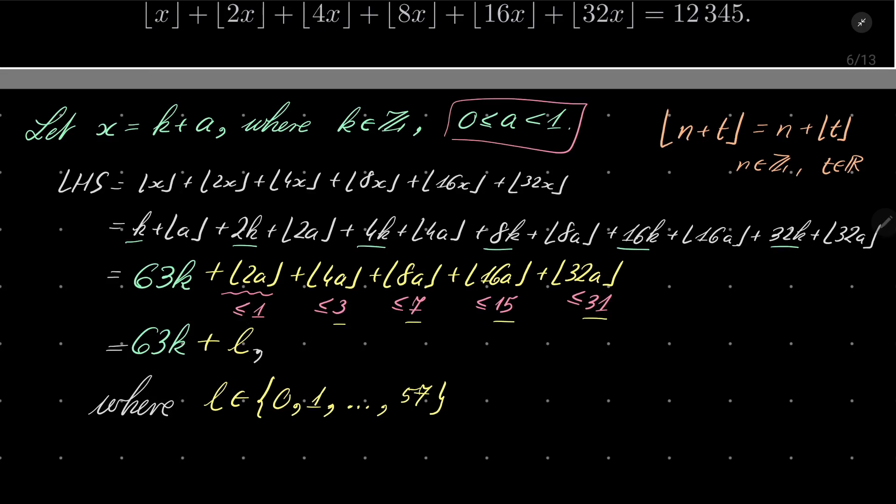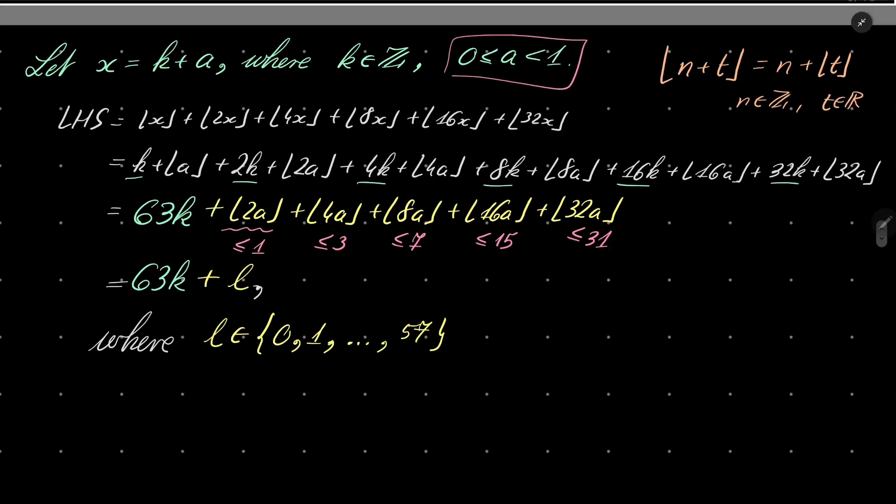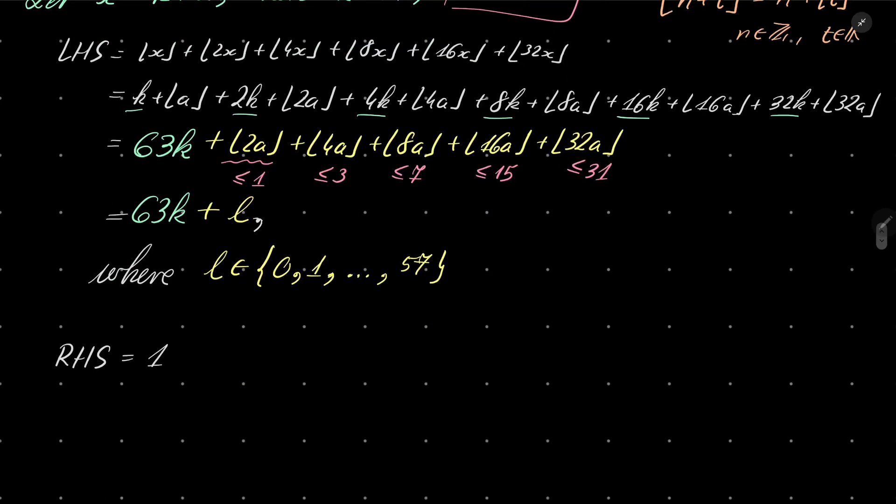Now what about the right-hand side? On the right-hand side we have 12,345, and after division with remainder it happens to be 63 times 195 plus 60.